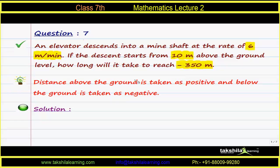The key point for this question is that distance above the ground is taken as positive and distance below the ground is taken as negative.